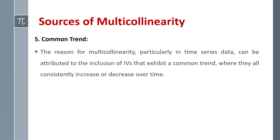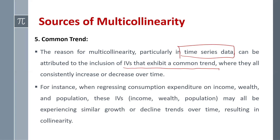The fifth source is a common trend, particularly in time series data. Multi-collinearity can arise from the inclusion of independent variables that exhibit a common trend. For instance, when regressing consumption expenditure on income, wealth, and population, these independent variables share a similar growth or decline during the specified period. Since they follow a common trend, we might have the problem of multi-collinearity.